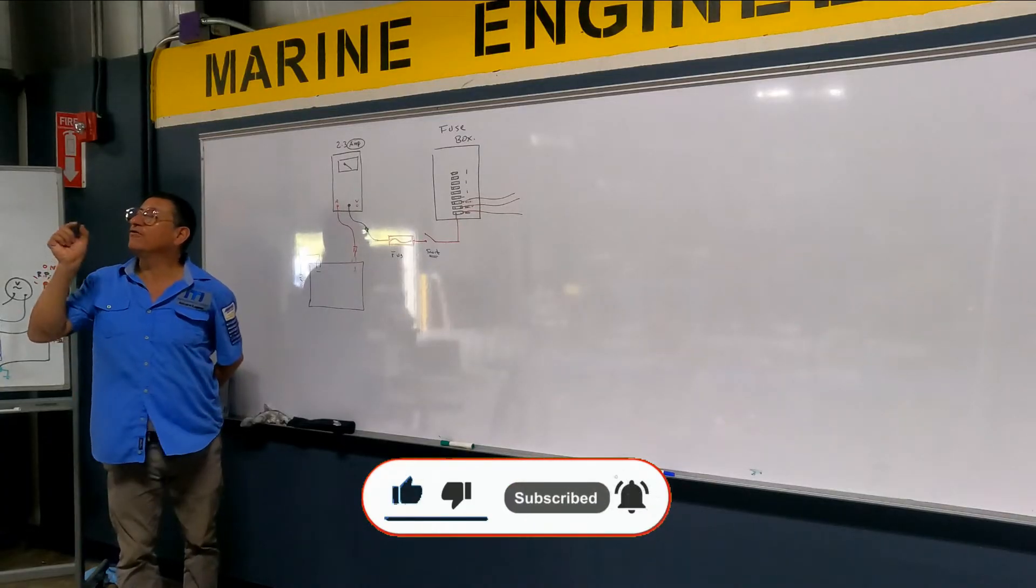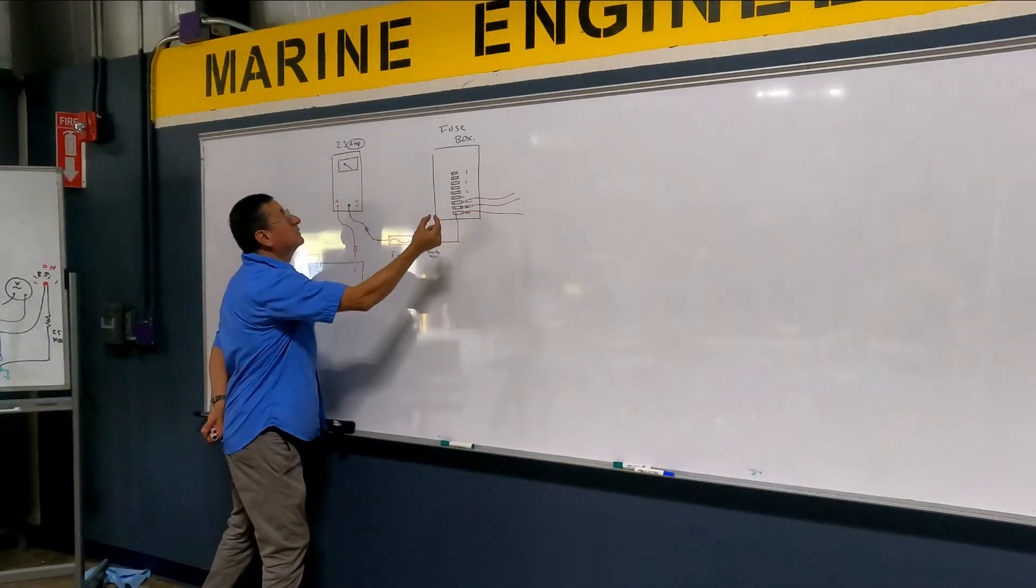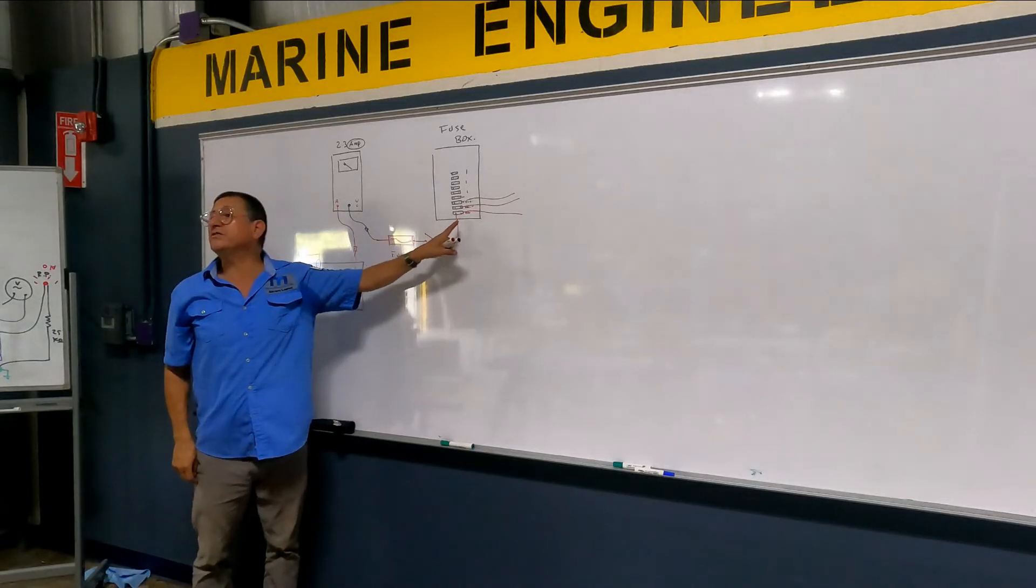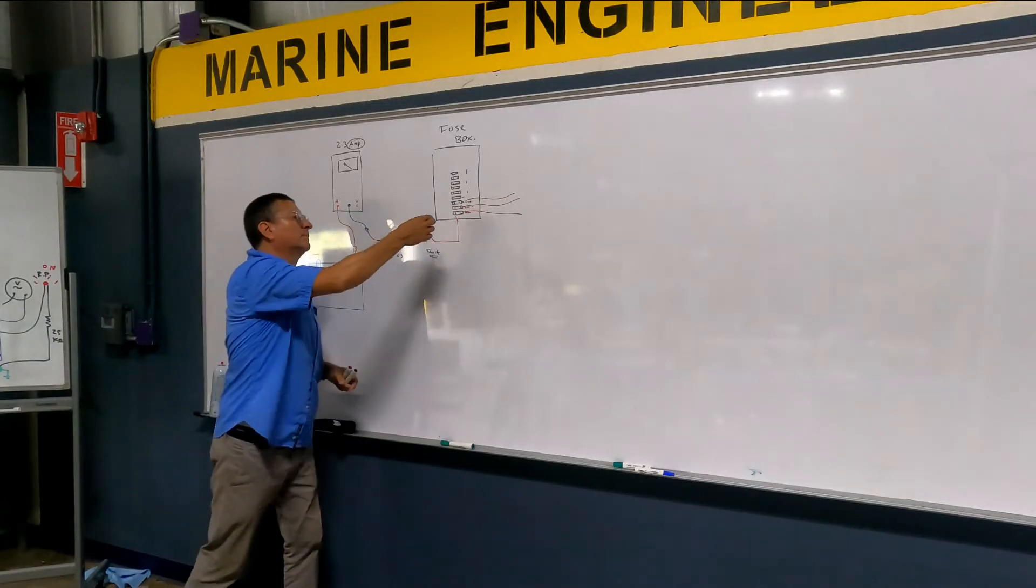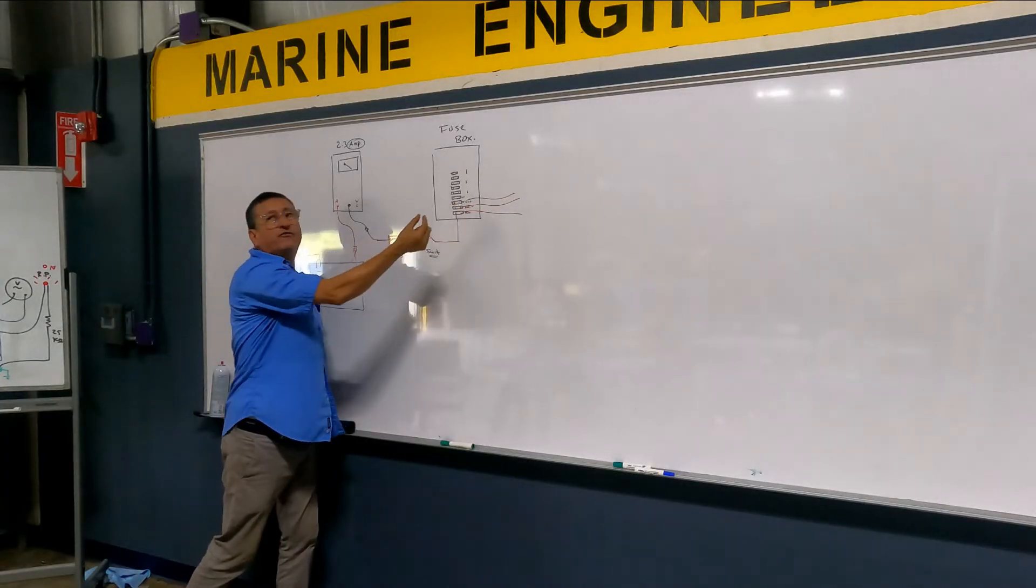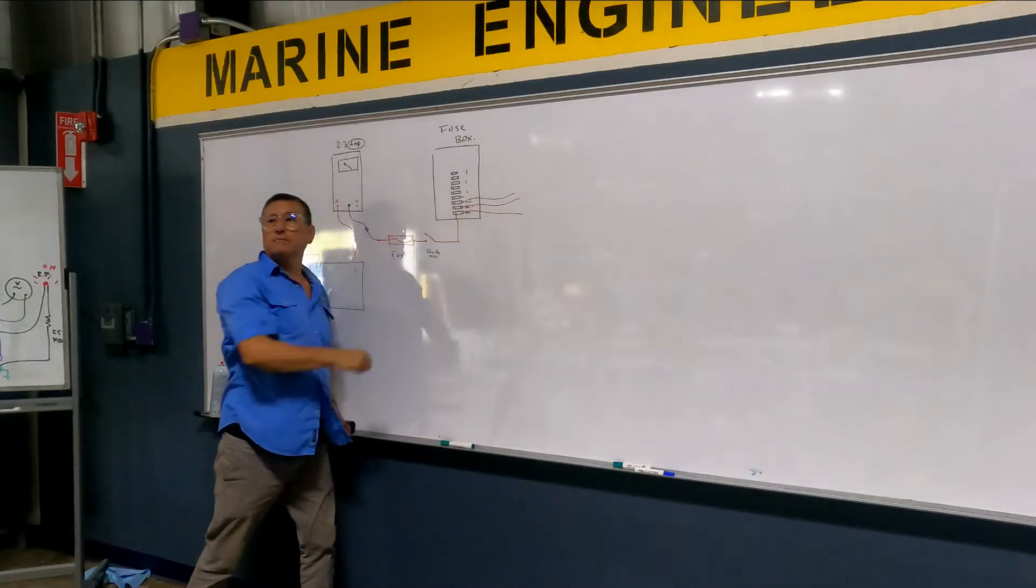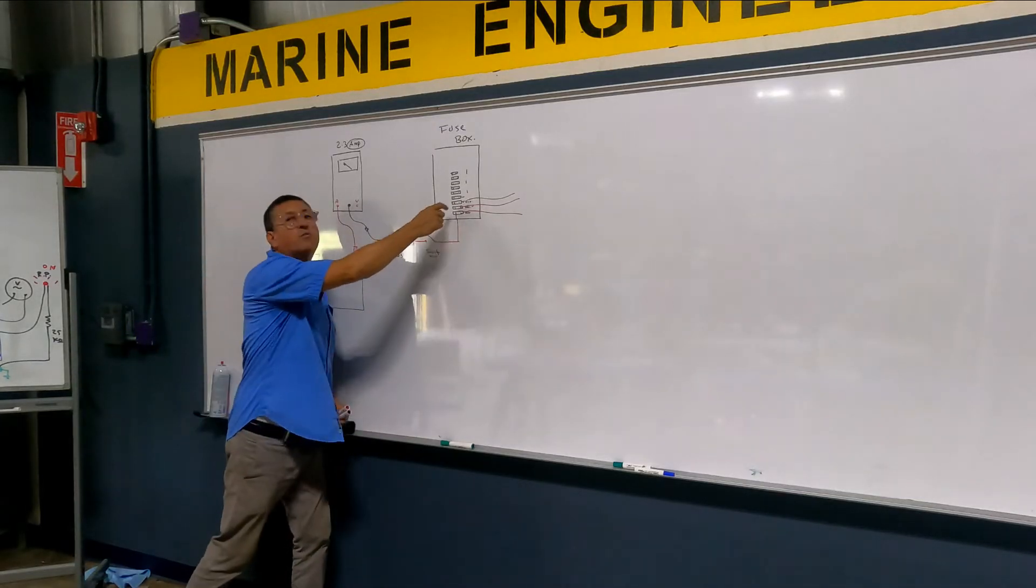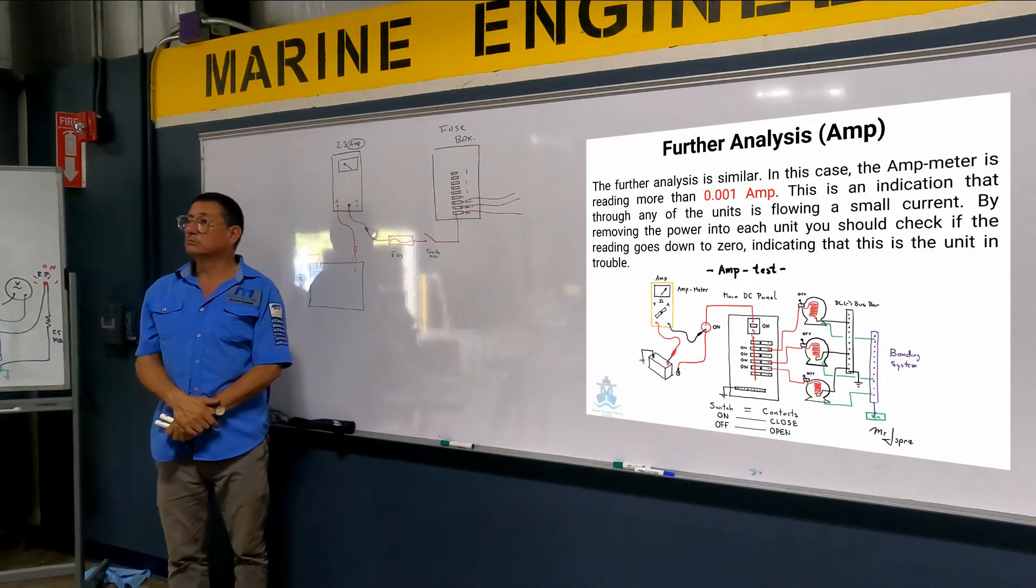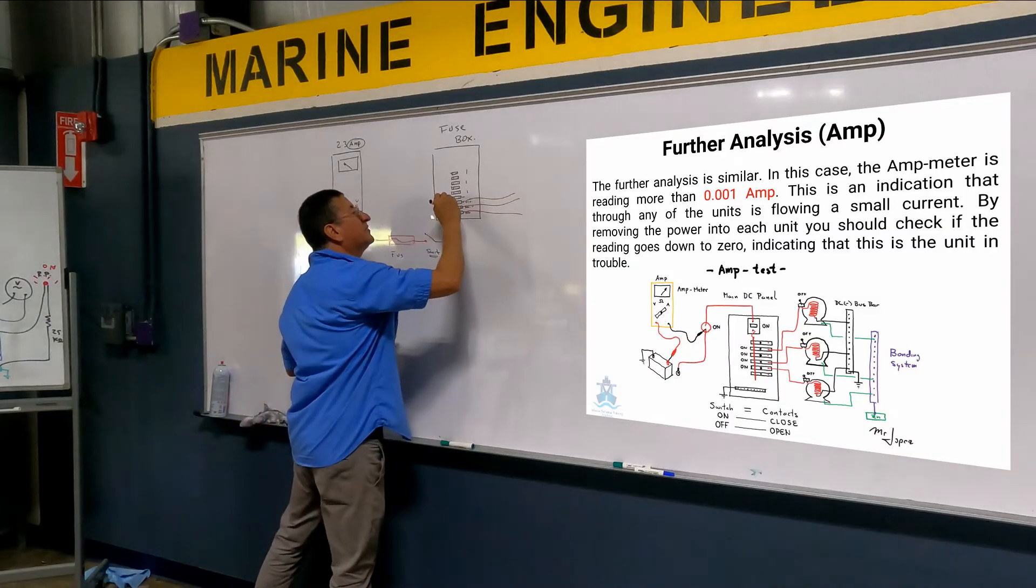I am going to start to remove fuse by fuse. I remove the first one and continue 2.3 amps. That circuit is the problem? No. I put it back the fuse. I am going to remove the second fuse. Continue 2.3 amps. I remove the third one and now reduce 1.2 amps. This is one of the problems.